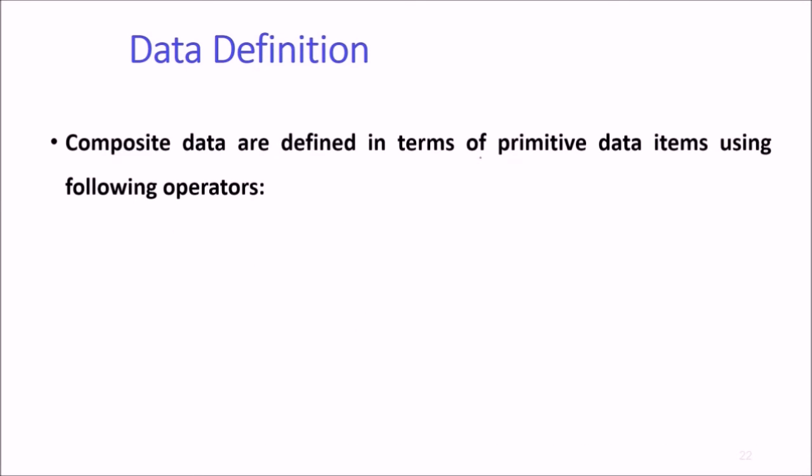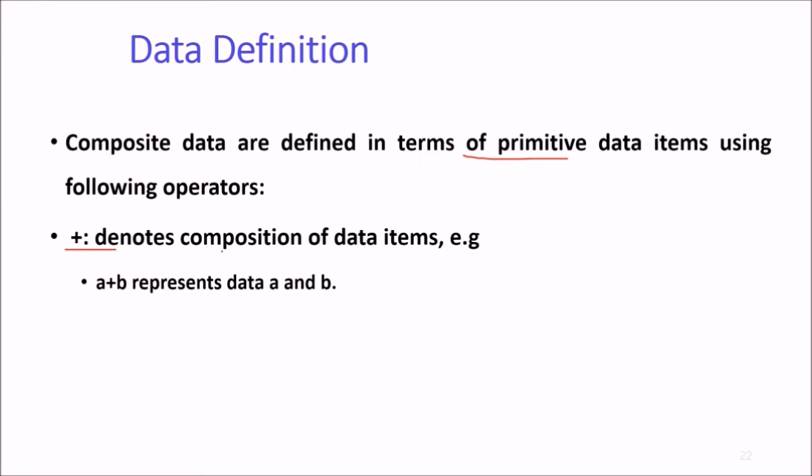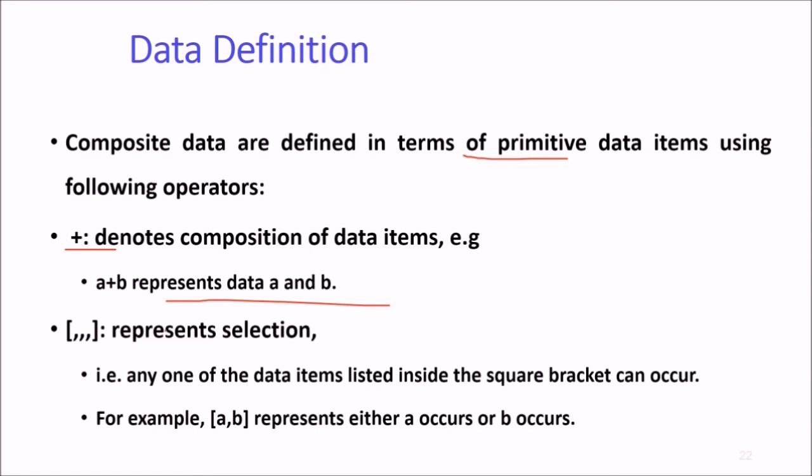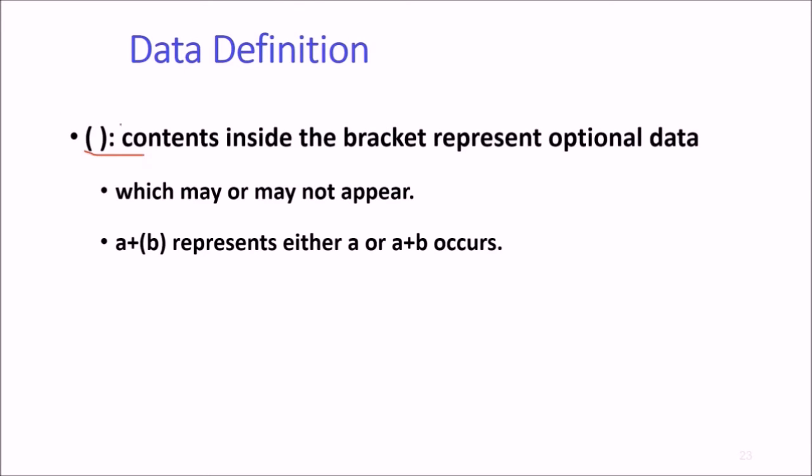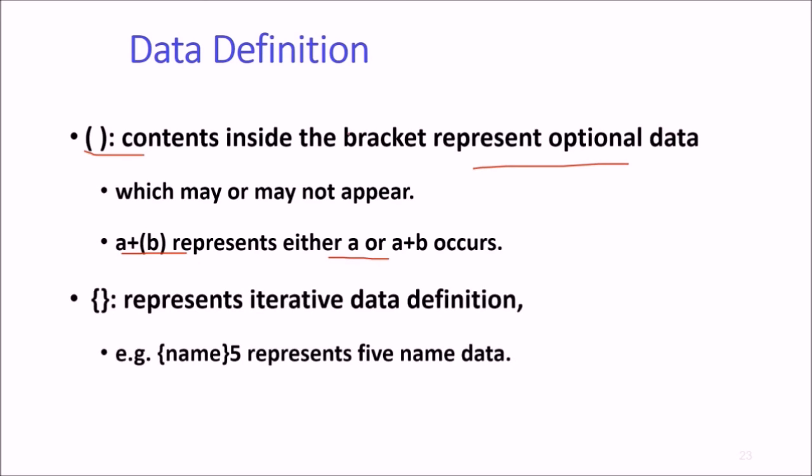Composite data are defined in terms of their primitive data items using operators. Plus denotes composition of data items; A plus B represents data A and B. Square brackets with commas means any one of the data items listed can occur. A comma B represents either A occurs or B occurs. Round brackets represent optional data which may or may not appear. For example, A plus bracket B represents either A or A plus B occurs.